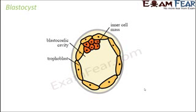Before discussing meroblastic cleavage, let's quickly cover the blastocyst, because we will use its terminology when explaining meroblastic cleavage. The zygote, which is a single cell, undergoes repeated mitotic divisions to form a two-cell, four-cell, eight-cell, and sixteen-cell structure, and finally forms a structure made up of 64 cells called the blastocyst.